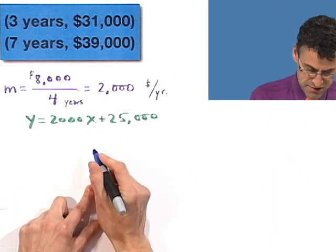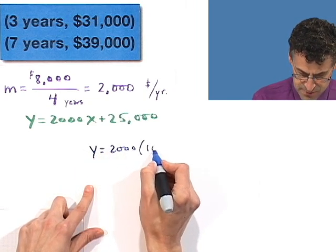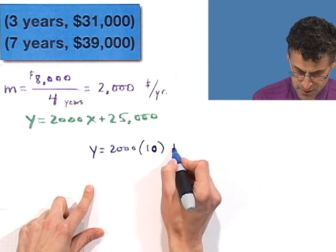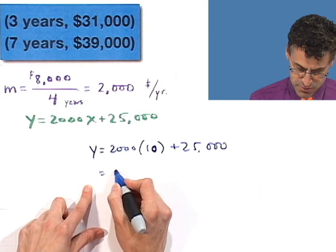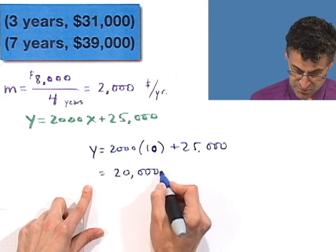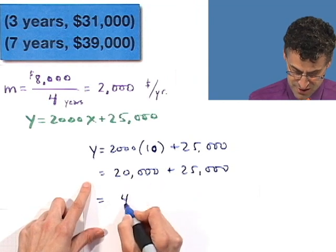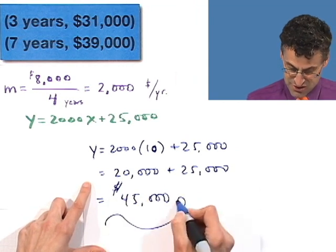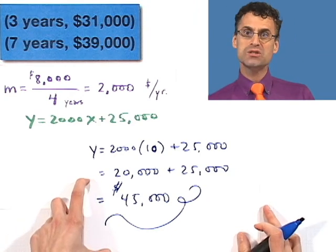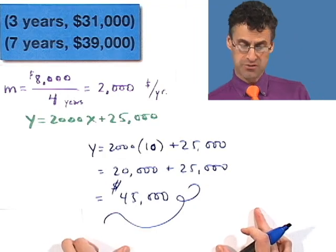So y, that's the value, equals 2,000 times 10 plus 25,000. And what is that? Well, this is going to be 20,000—I'm liking this—plus 25,000. Because the reason why I like this, of course, see, the answer is 45,000, but you know why I like it? I get to put a dollar sign in front of it. So $45,000 is the value of my painting 10 years after I purchased it. Awesome.